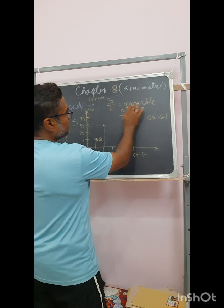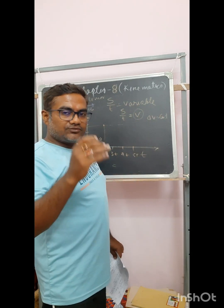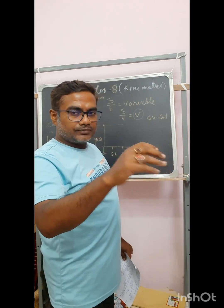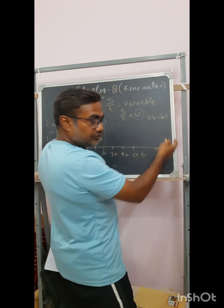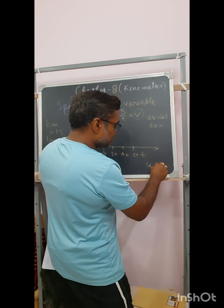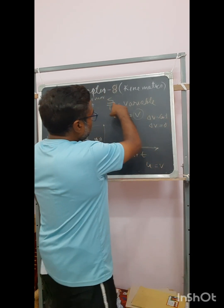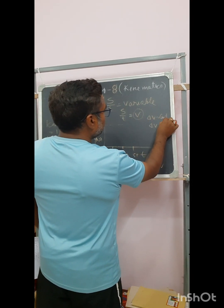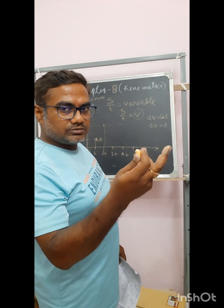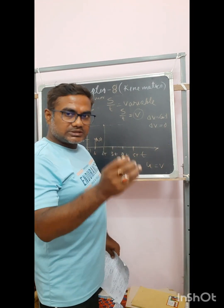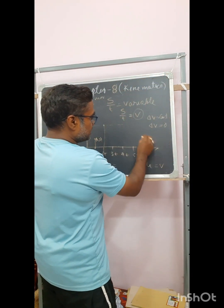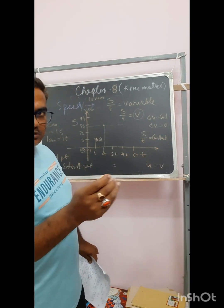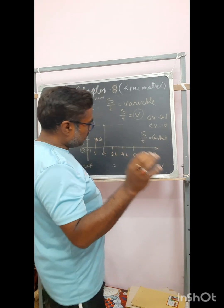So when s by t is variable, two conditions arise. First: s by t is constant means v is constant, delta v is zero — for uniform velocity, u equals v, so delta v = 0. Second: s by t is variable means delta v is either constant or variable. There is something important that needs to be understood perfectly about s by t.